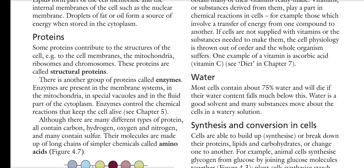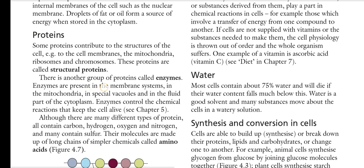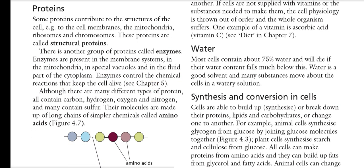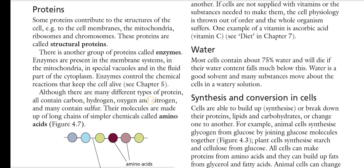Another group of proteins are the enzymes. Enzymes are present in the membrane system, in the mitochondria, in special vacuoles, or in the fluid part of the cytoplasm called the cytosol. For example, glycolysis enzymes are present in the cytosol. Enzymes control the chemical reactions that keep the cell alive. Although there are many different types of protein, all contain carbon, hydrogen, oxygen, and nitrogen.